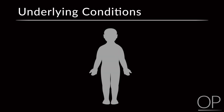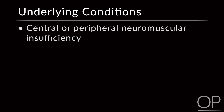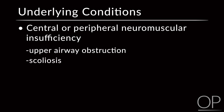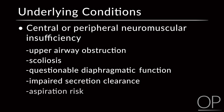It's crucial to understand the underlying conditions of the child with special healthcare needs, as this will provide insight into their propensity for respiratory insufficiency. A top-down or systematic assessment may be really helpful. Think about central or peripheral neuromuscular insufficiency resulting in altered mechanics, upper airway obstruction, a restricted thoracic cage from scoliosis, questionable diaphragmatic function, impaired secretion clearance, or aspiration risk.